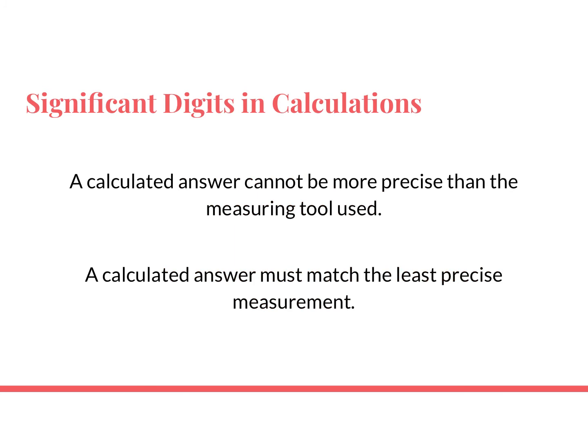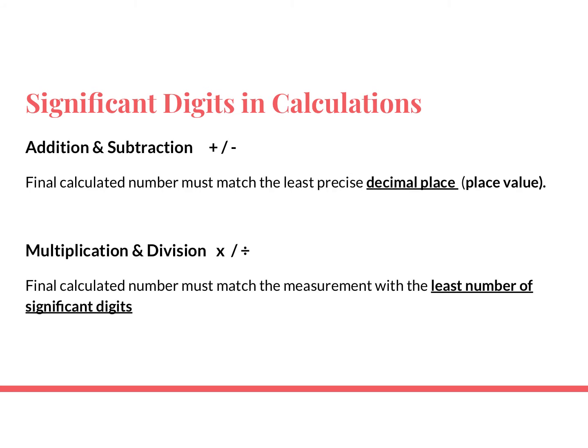In calculations in science you'll be adding, subtracting, multiplying, or dividing. Your calculated answer can never be more precise than your measuring tool, and your answer must match the least precise measurement you're using. For addition and subtraction, it's about decimal place — I remember this because there are two d's in 'addition.' For multiplication and division, it's about significant figures. So: in addition and subtraction, round to the least precise decimal place; in multiplication and division, round to the least number of sig figs.